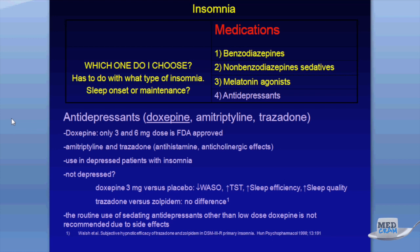The last category is antidepressants — doxepin, amitriptyline, and trazodone. If a patient is depressed and also having problems with sleep, it's reasonable to pick an antidepressant that also treats insomnia. But I wouldn't use an antidepressant as a first-line agent if the patient doesn't have a psychiatric illness. Doxepin is FDA-approved for insomnia, but trazodone versus zolpidem showed no difference in trials — so why not use the one FDA-approved for insomnia? Sleep societies don't recommend sedating antidepressants without a psychiatric indication.